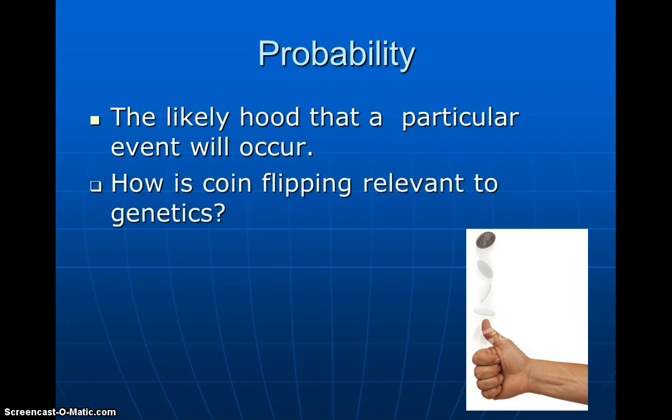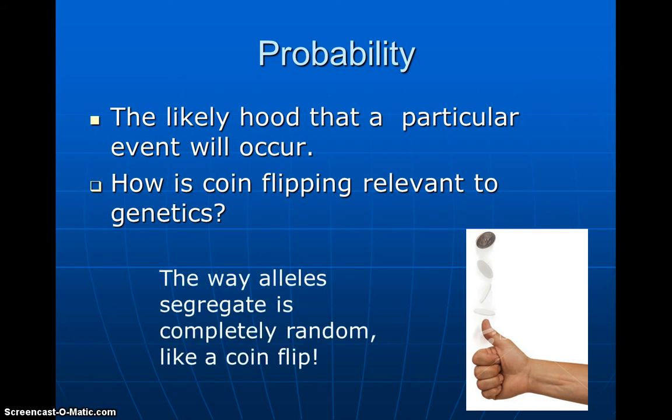How is a coin flip relevant to genetics? The way alleles segregate is completely random, just like a coin flip. It's either going to be heads or tails, but every time you do it, it's going to be random.